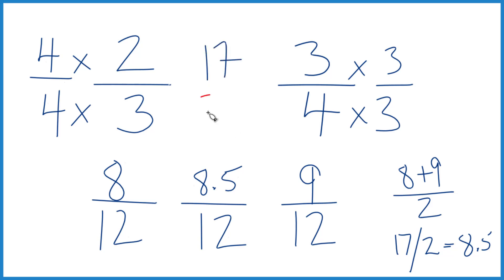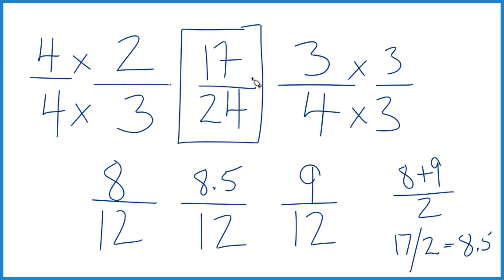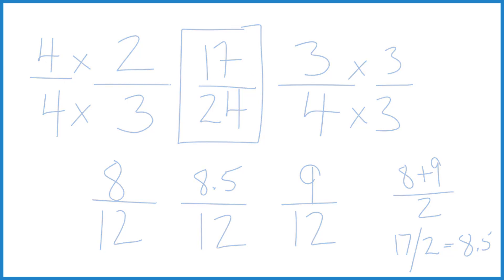Twelve times two is twenty-four. So the fraction exactly halfway between two-thirds and three-fourths is seventeen twenty-fourths. And if you added two-thirds plus three-fourths and divided by two, you get the same answer. That's it. This is Dr. B, and thanks for watching.